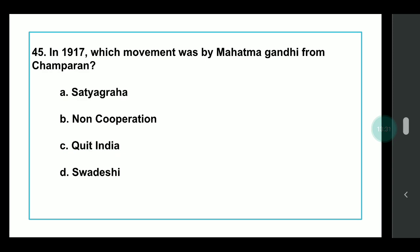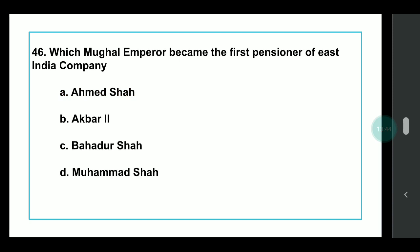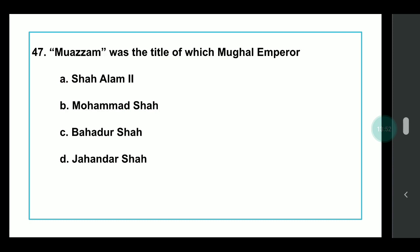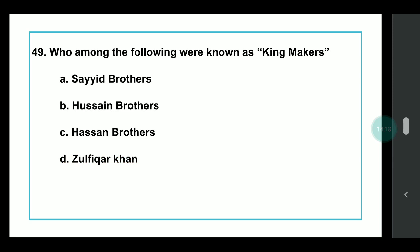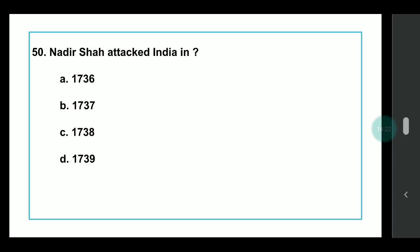Q41: Which movement did Mahatma Gandhi start from Champaran? Answer: Champaran Satyagraha in 1917. Q42: Which Mughal Emperor became the first pensioner of the East India Company? Answer: Akbar II. Q43: Muazzam was the title of which Mughal Emperor? Answer: Bahadur Shah. Q44: Which Mughal Emperor abolished the Jizya tax after Aurangzeb? Aurangzeb had re-imposed Jizya; after his death it was abolished by Farrukhsiyar. Q45: Who was known as Kingmakers? Answer: Sayyid Brothers. Last question: When did Nadir Shah attack India? Answer: 1739.